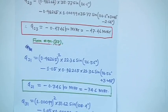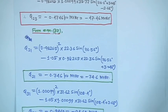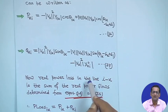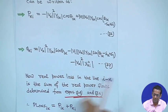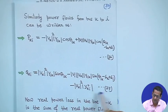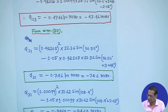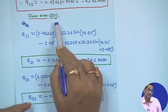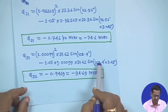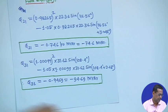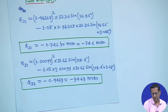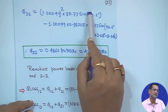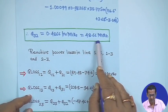From equation 37, that is Q_ki, the expression is given. Note that charging admittance is not considered, so that term will be 0. If you calculate Q₂₁, it comes to minus 74.6 megawatt using equation 37. Similarly, Q₃₁ upon substitution gives minus 94.69 megawatt. Then Q₃₂, using the same expression with all values, gives Q₃₂ equal to 48.66 megawatt.